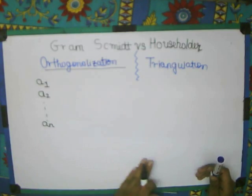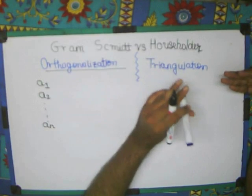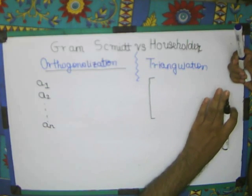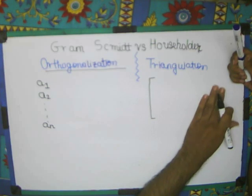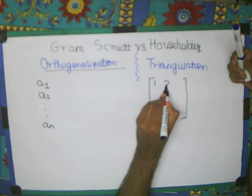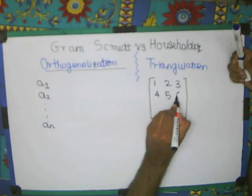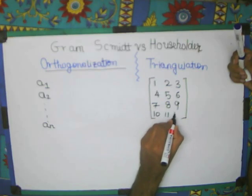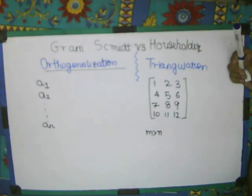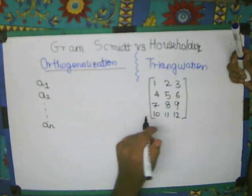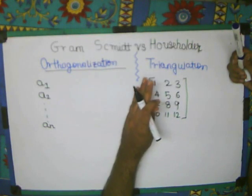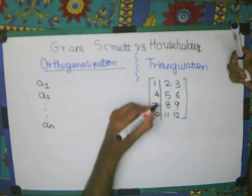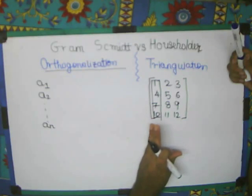So now what is householder first of all, in householder what we do is that let me take the number of rows, M is greater than N, if we take, so this is the default case which I am taking. Now here, what triangulation will do, this householder method will do, we know already Gramschmidt. It will map, it will do some operation on this in such a way that this becomes triangular.